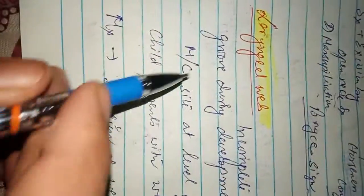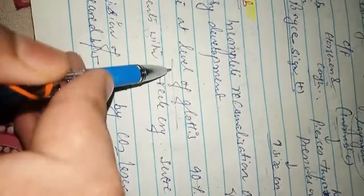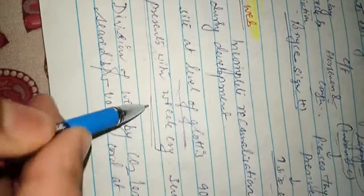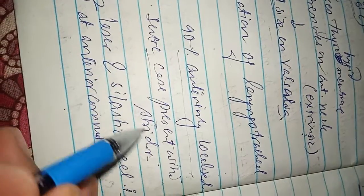Now coming to laryngeal web. Laryngeal web is an incomplete recanalization of the laryngotracheal groove during development. Most common site is at the level of glottis. The child presents with weak cry, so cry is abnormal. Ninety percent are anteriorly located. In severe cases, it presents with stridor.